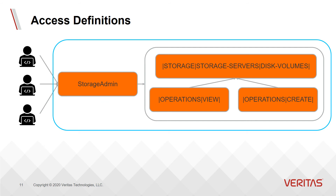Now to tie all these things together, we have an access definition. An access definition represents a unit of configured access on a namespace. It consists of an object namespace, a role, and one or more operations. You'll notice that it doesn't include the user. This is where that grouping of users into roles comes into play. Combining all these things gives us something that RBAC can now enforce: what is being accessed, who can access it, and what can they do with it.